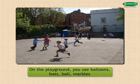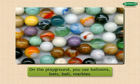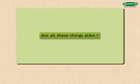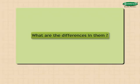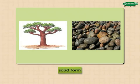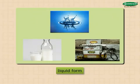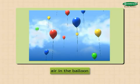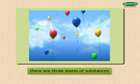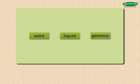On the playground, you use balloons, bats, ball, marbles, etc. Are all these things alike? What are the differences in them? A tree and stone are in solid form. Water, milk, petrol are in liquid form, while the air in the balloon is in gaseous form. Thus, we see that there are three states of substances: solid, liquid, and gaseous. We use them in everyday life.